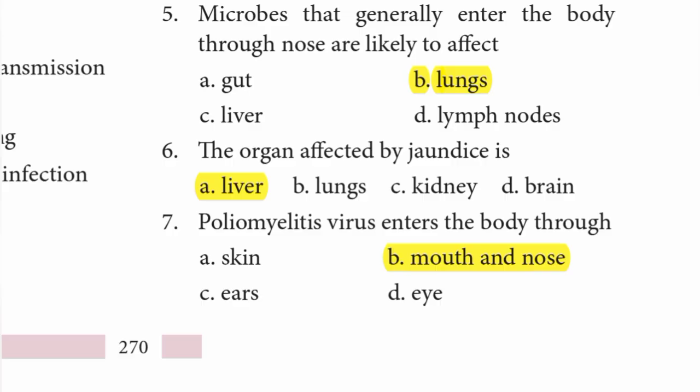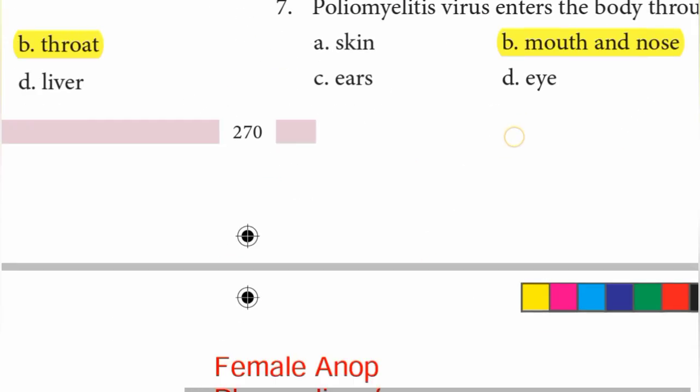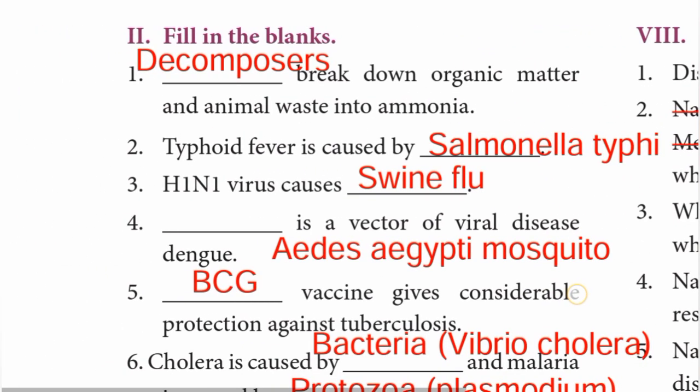Number six — the organ affected by jaundice is: option A liver, B lungs, C kidney, or D brain? The answer is option A: liver. Number seven — poliovirus enters the body through the mouth and nose, option B, which is the correct answer. Moving to page 271, Roman number two: Fill in the blanks.